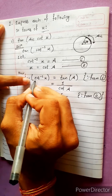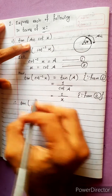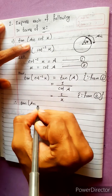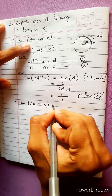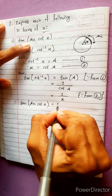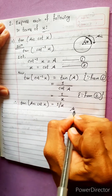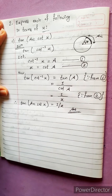The question is: tan of cot inverse x. We can write directly: tan(cot inverse x) equals 1 by x. This is the answer. Now be ready for the next question — thank you and bye bye.